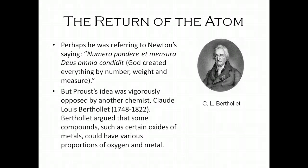But Proust's idea was vigorously opposed by another chemist. As we go through the history of science, you start to pick up on this pattern of new theory and opposition. Last time it was Lavoisier and the opposition was Joseph Priestley. We tend to pick out particular scientists, though it's rarely just one scientist involved on either side of the debate. In this case, Bertollet was one of the more outspoken ones, and he was also a very prominent chemist at the time.